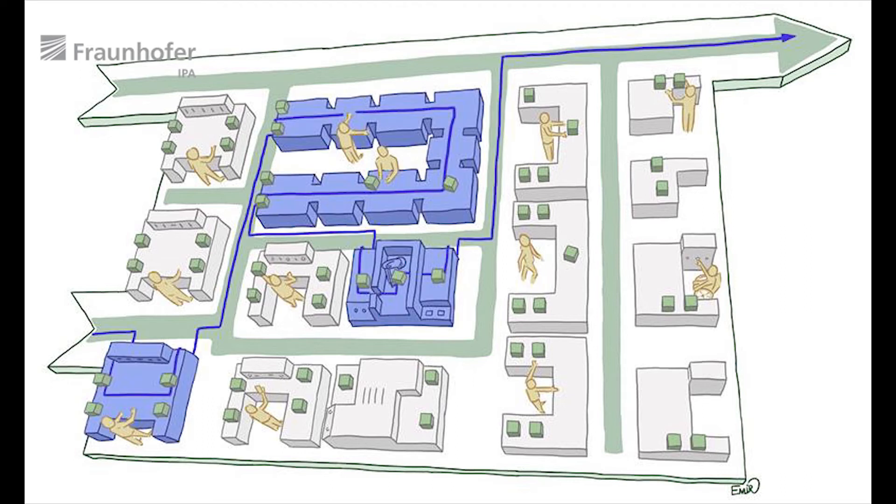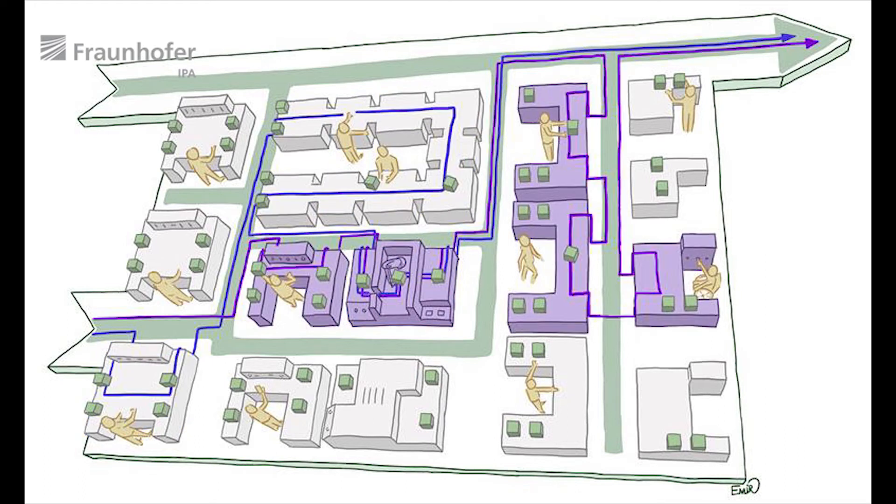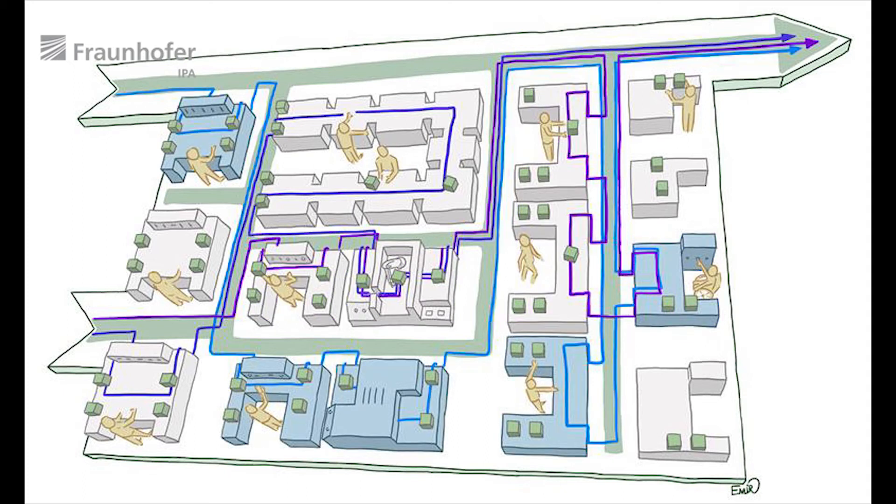A flexible material flow links the production modules during operation. Each variant follows its individual path through the system. A sequencing of the variant mix is no longer necessary.